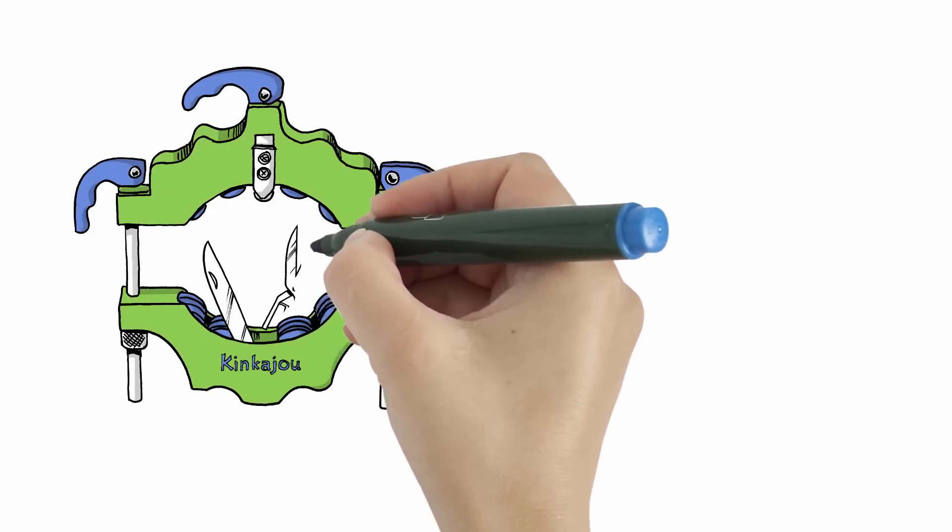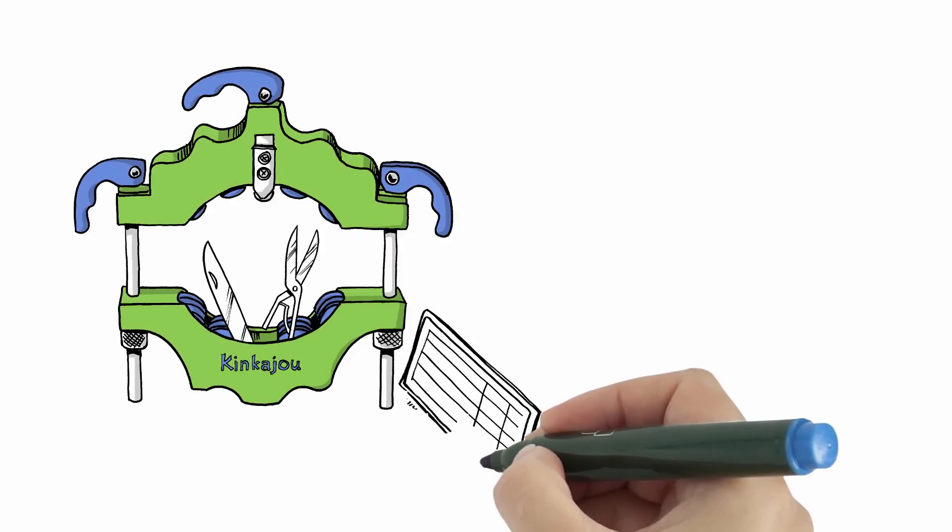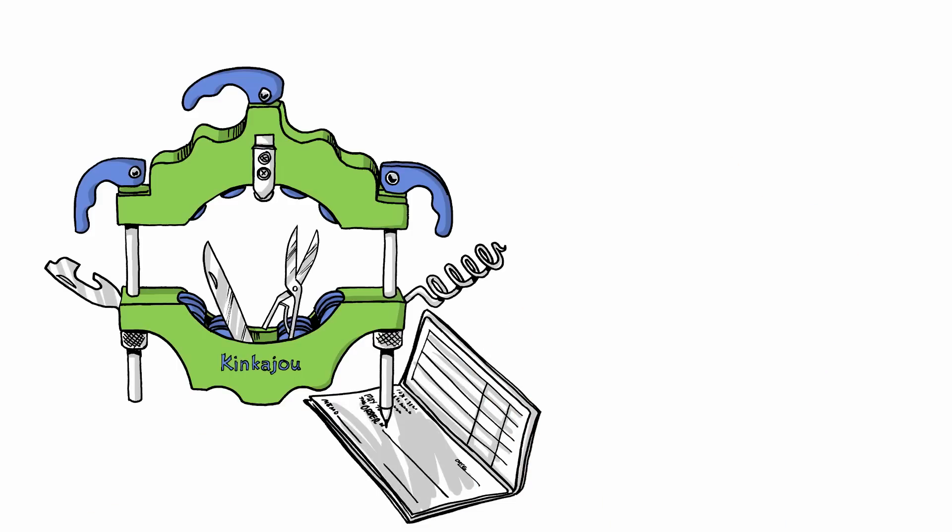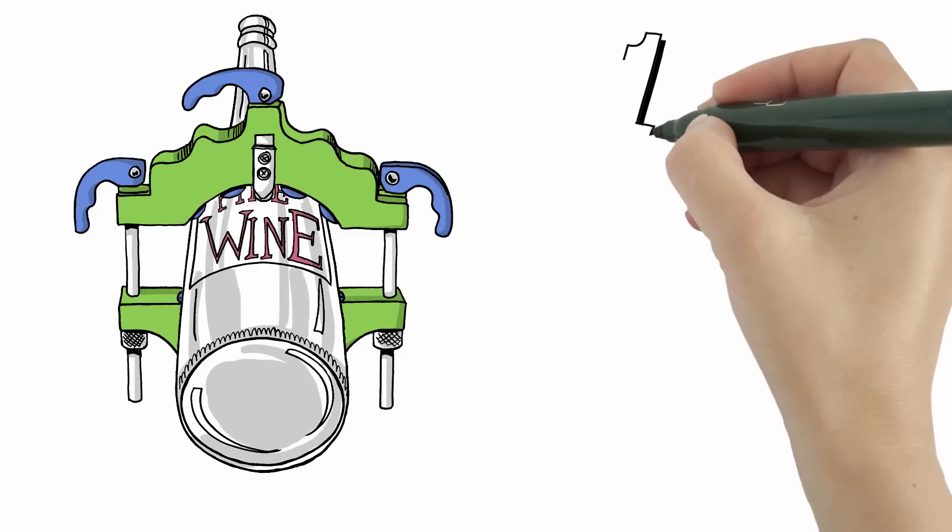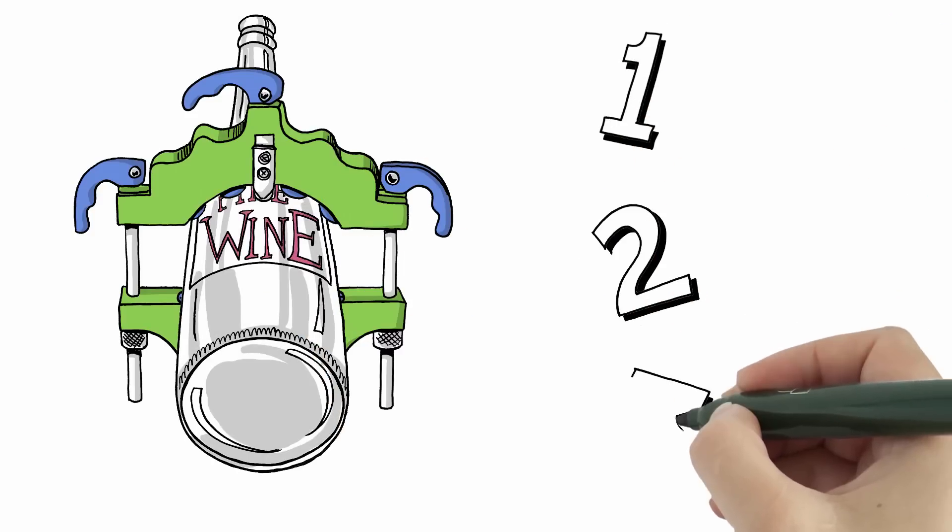It slices, it dices, it can even balance your checkbook. Okay, well maybe not all of that, but it does make slicing up your favorite bottles easy as 1, 2, 3.